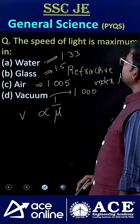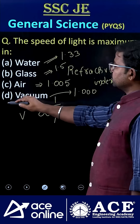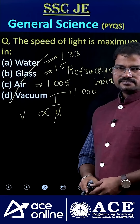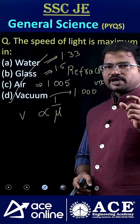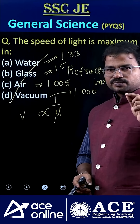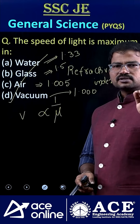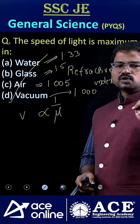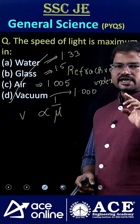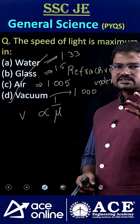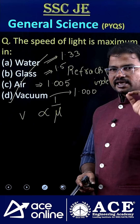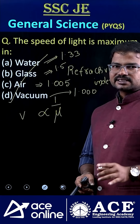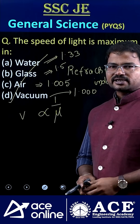So the speed of light is maximum in vacuum — option D is the right answer. Now, consider the seven colors: violet, indigo, blue, green, yellow, orange, red. Which of these colors exhibits the highest speed in glass? If you know the answer, please comment.